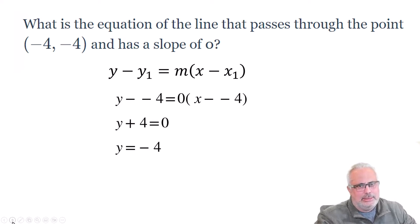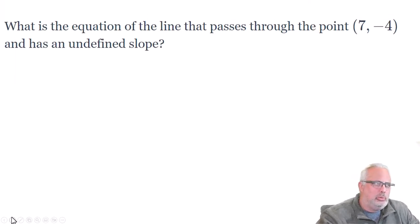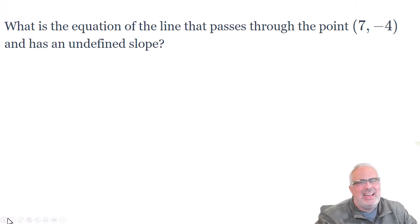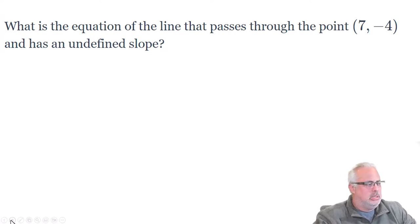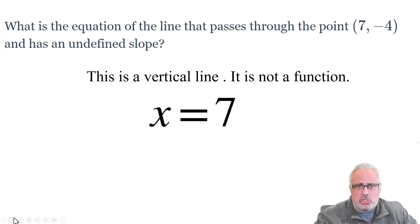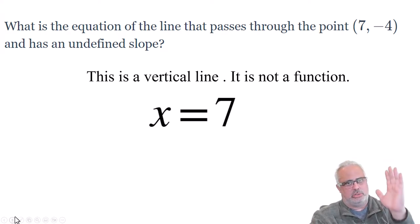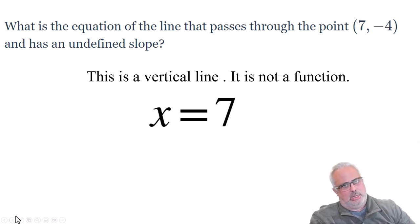You can see the whole thing: y minus y1 equals m times x minus x1. This is the point-slope form. We place the values for y1, x1, and m, and do the algebra. What is the equation of the line that passes through (7, -4) and has an undefined slope? If we have an undefined slope, the line is vertical. This is not a function because the line is vertical — no slope. The equation of this line is simply x equals 7. It's a vertical line parallel to the y-axis, and all points on that line have x equal to 7.